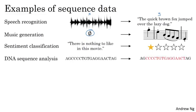Sequence models are also very useful for DNA sequence analysis. Your DNA is represented via the four alphabets A, C, G, and T. And so given a DNA sequence, can you label which part of this DNA sequence corresponds to a protein?